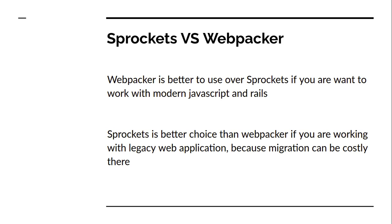Now let's understand the difference between Sprockets and Webpacker. Sprockets, which was designed to be used with Rails, is simpler to integrate because code can be added via a Ruby gem. For example, with previous versions of Rails — up to Rails 5.x — Rails used gems for adding Bootstrap, fonts, icon libraries, jQuery, autocomplete, select, alerts, and so on. You can still find gems for these libraries, like the simple Bootstrap and Bootstrap Sass gems.